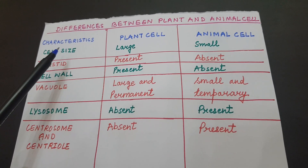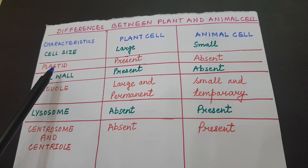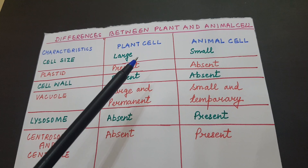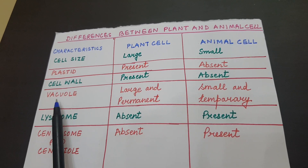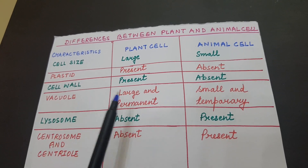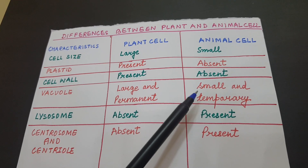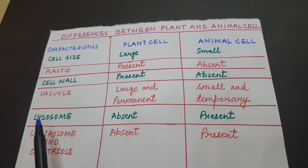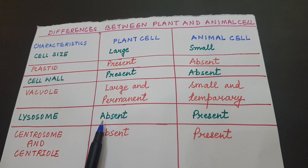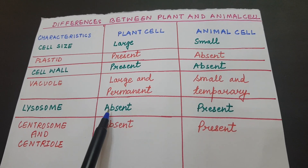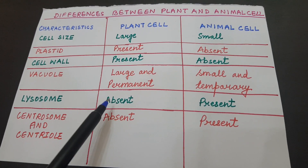In terms of cell size, plant cells are large while animal cells are small. Plastids are present in plant cells but absent in animal cells. Cell wall is present in plant cells but absent in animal cells. Vacuoles are large and permanent in plant cells, but small and temporary in animal cells. Lysosomes are generally absent in plant cells because vacuoles perform the same function, but present in animal cells. Centrosome and centrioles are absent in plant cells and present only in animal cells.